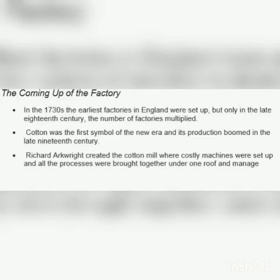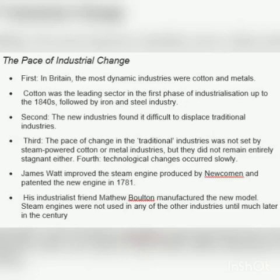Regarding the coming of the factory — in the 1730s the first factories in England were set up, but only in the late 18th century did the number of factories multiply. Cotton was the first symbol of the new era and its production boomed in the late 19th century. Richard Arkwright created the cotton mill, where costly machines were set up and all the processes were brought together under one roof, managing the pace of industrial change.